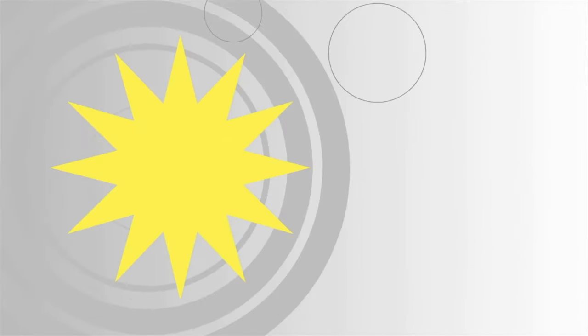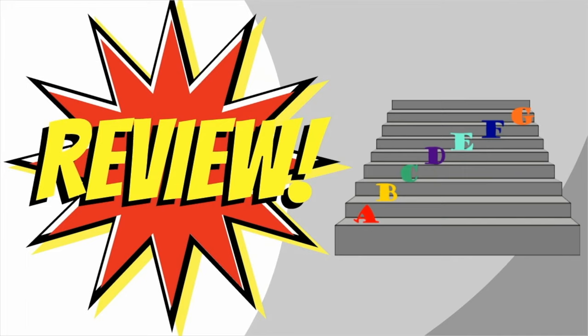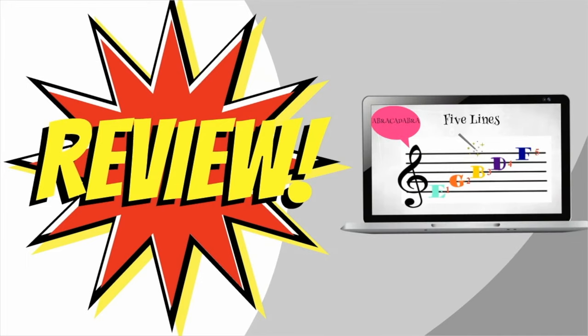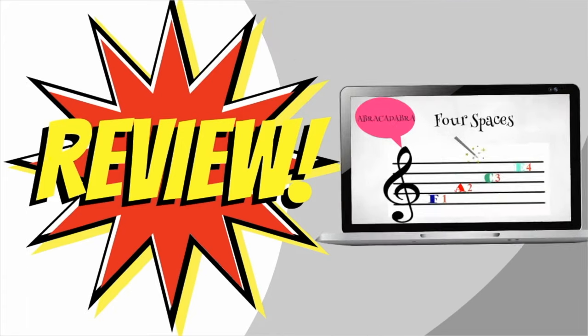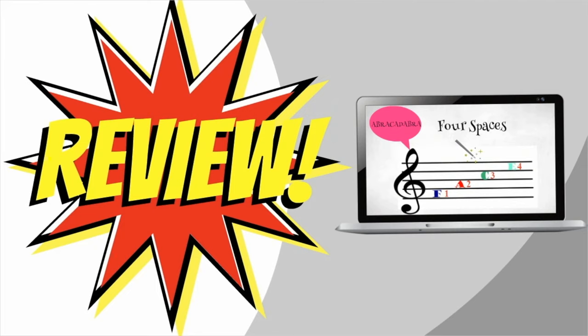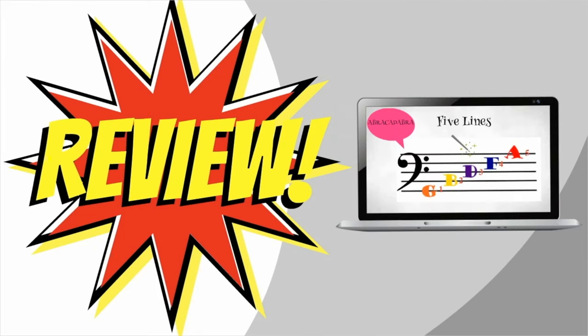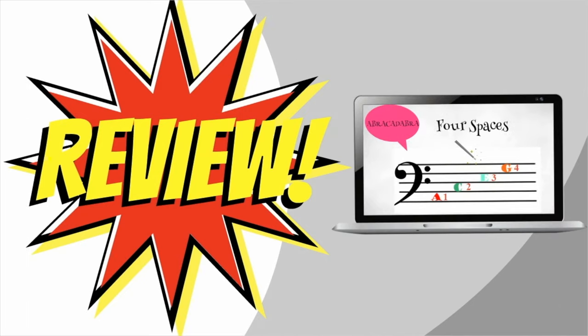Let's review. The music alphabet has seven letters: A, B, C, D, E, F, G. The order of the treble clef lines are E, G, B, D, and F. The spaces are F, A, C, E. The order for the bass clef lines is G, B, D, F, and A. And the order of the bass clef spaces are A, C, E, and G. Awesome!